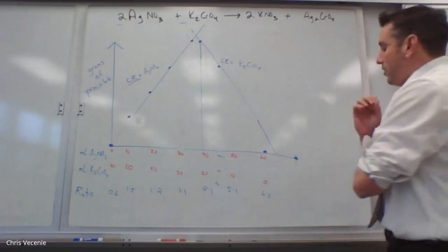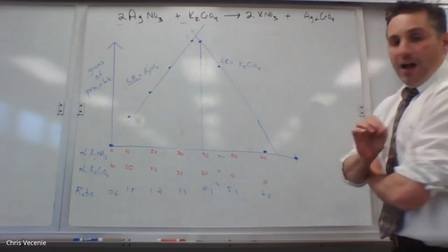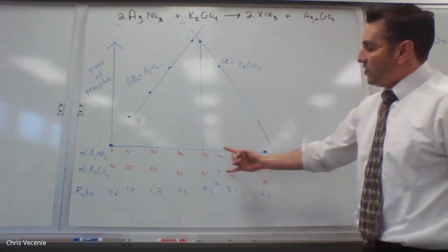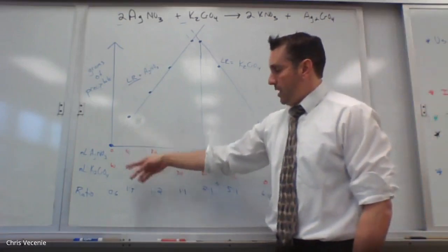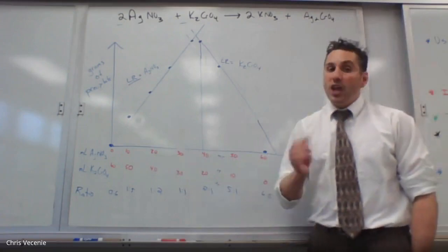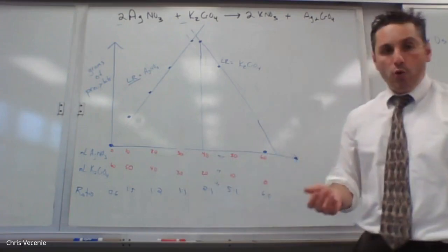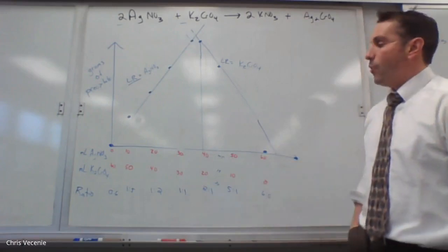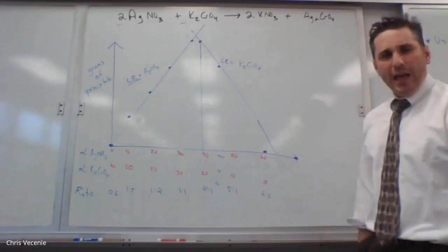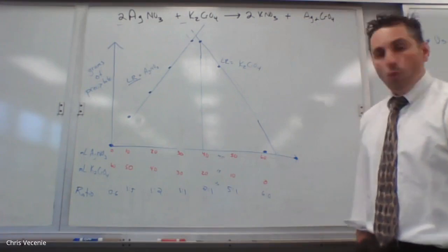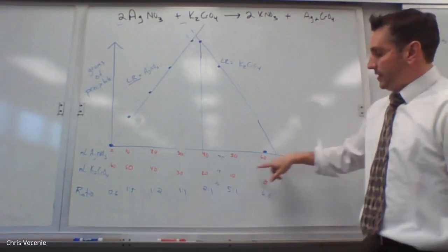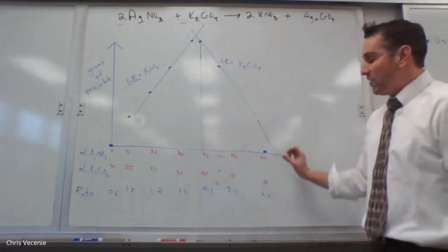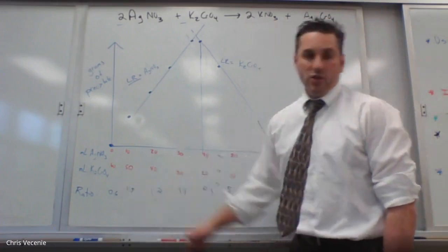Notice that every trial had the same total volume. This is important because if I change the total volume to something other than 60 mL, I'm changing the ratio I'm looking at, which is no good. The total volume must be a constant number. Zero and 60 is 60. Ten and 50 is 60. Twenty and 40 is 60. Thirty and 30 is 60. You have to keep the total volume the same to maintain the correct ratios.